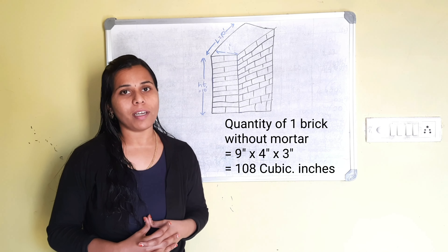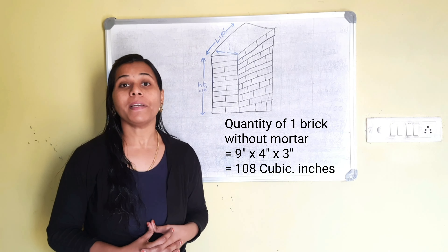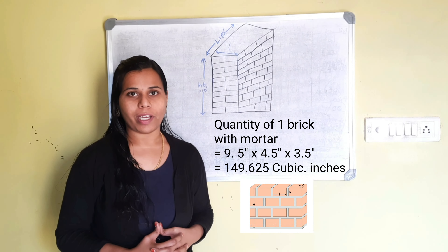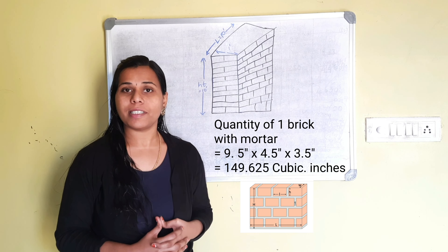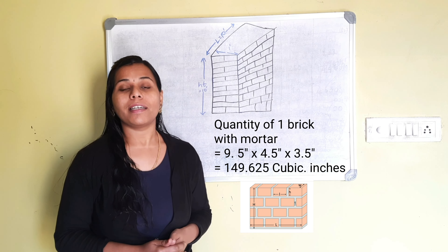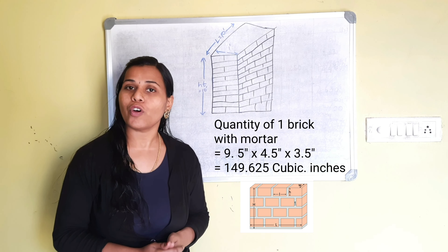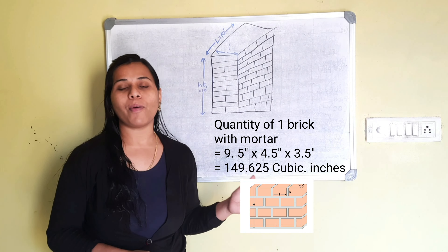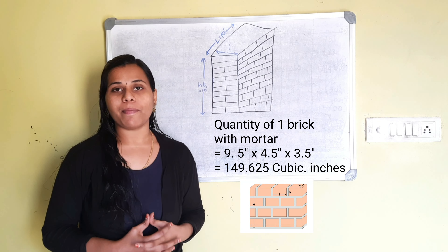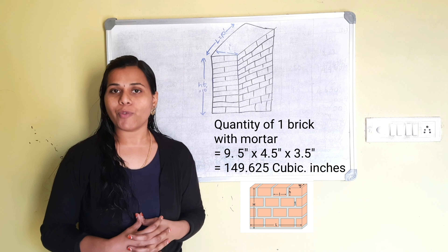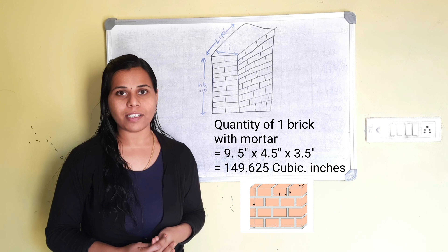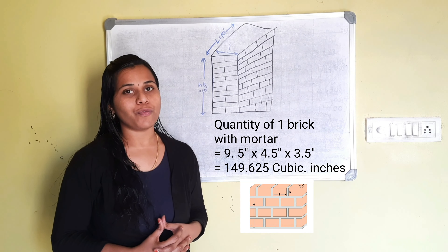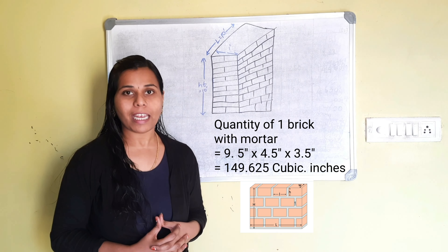We get 108 cubic inches. The quantity of one brick with mortar is equal to 9.5 inches x 4.5 inches x 3.5 inches. When we multiply this, we get the answer as 149.625 cubic inches.